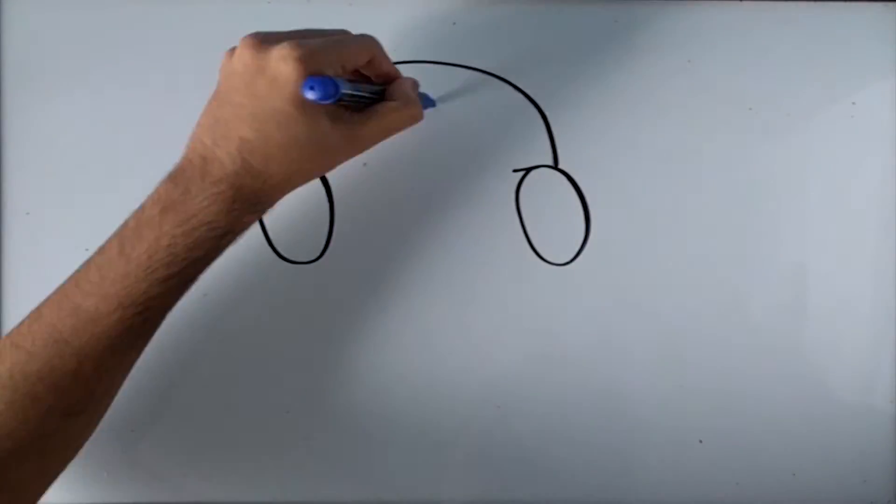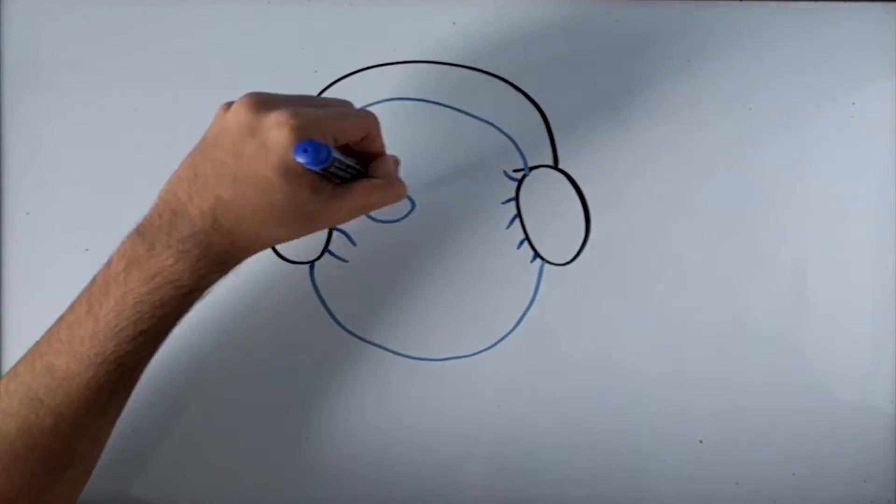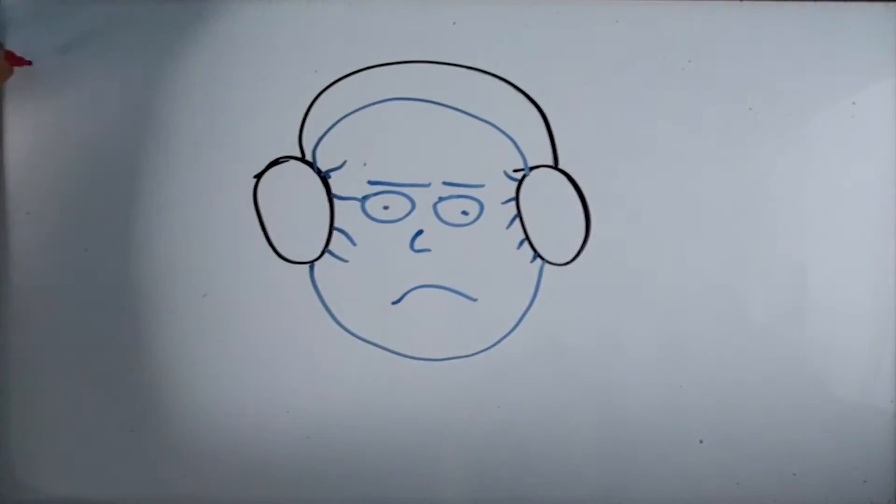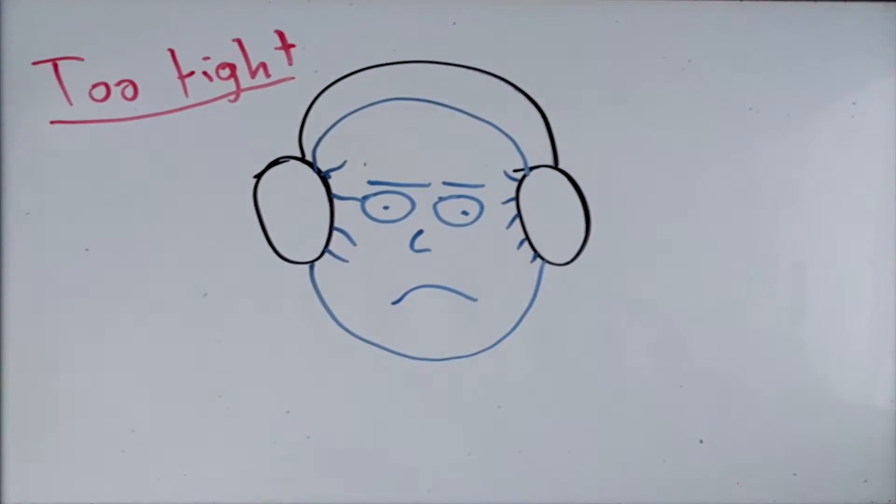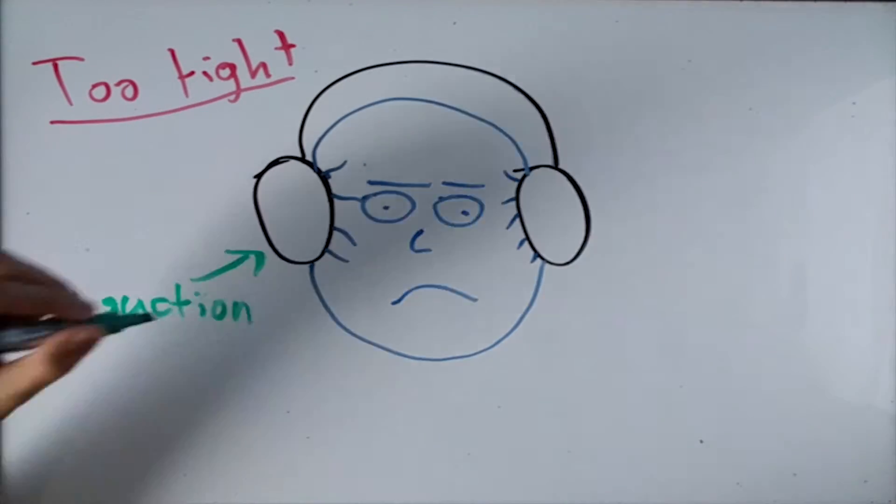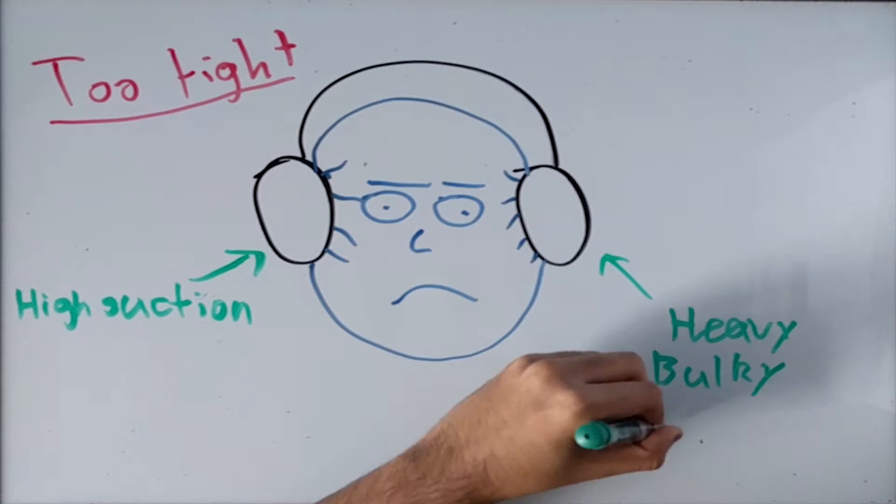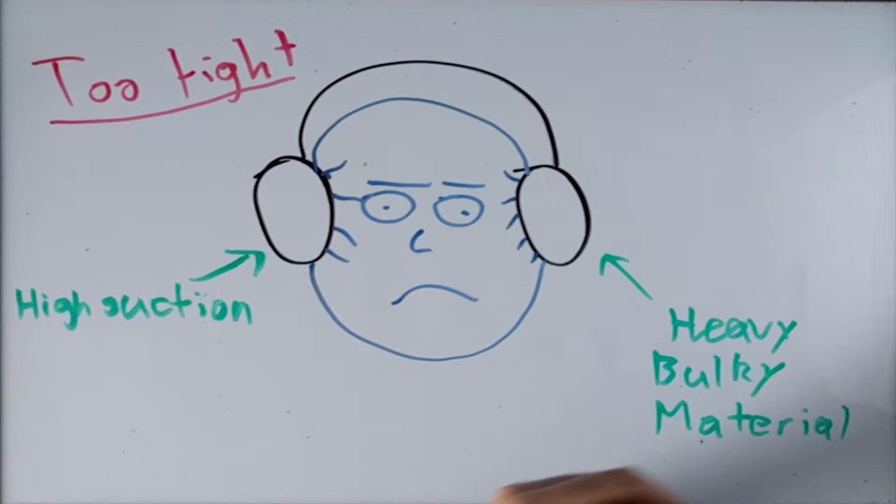Passive noise isolation is extremely crude and simple. It works by creating a seal around your ears so that there is no noise leaking from the outside world. However, this usually means that the headphones have to be tight and have strong suction, which is uncomfortable for most people.